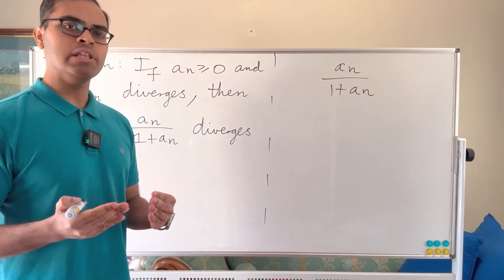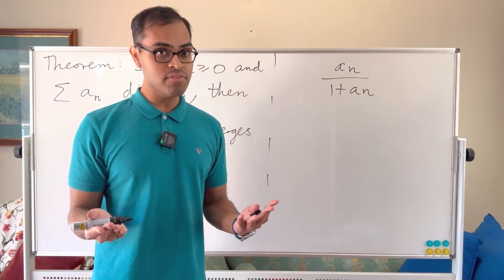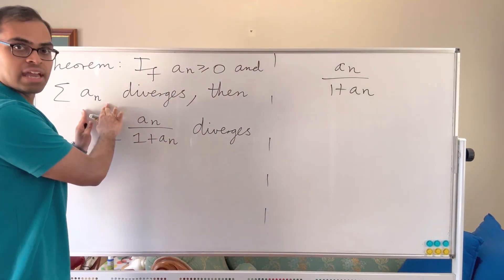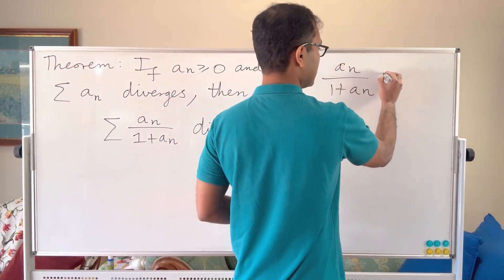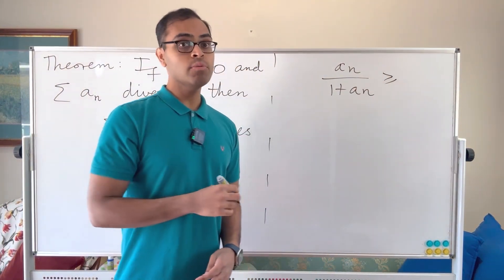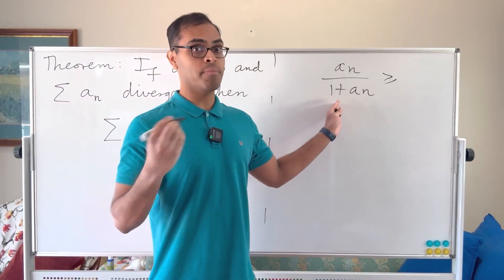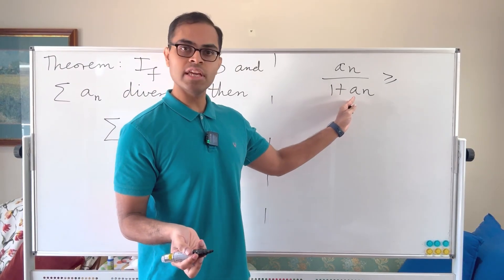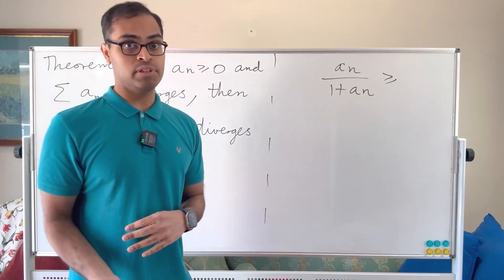If we can estimate it from below with a series that diverges, maybe in terms of an, then we can solve the problem. Now how do we estimate a fraction from below? Well, we want to estimate the denominator from above. If we can bound the denominator from above, the whole fraction is going to be bounded from below.